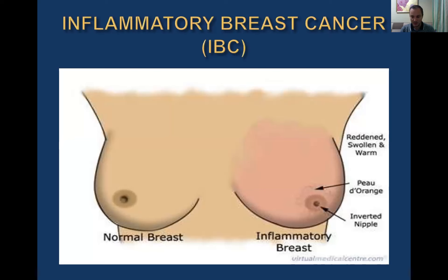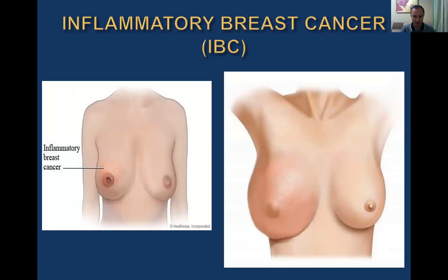Here are some signs of this tumor: inverted nipple due to very severe edema of the breast, peau d'orange also due to edema of the skin, etc. There are different types of inflammatory breast cancer — it can be practically local inflammatory forms and diffuse, involving all of the breast.